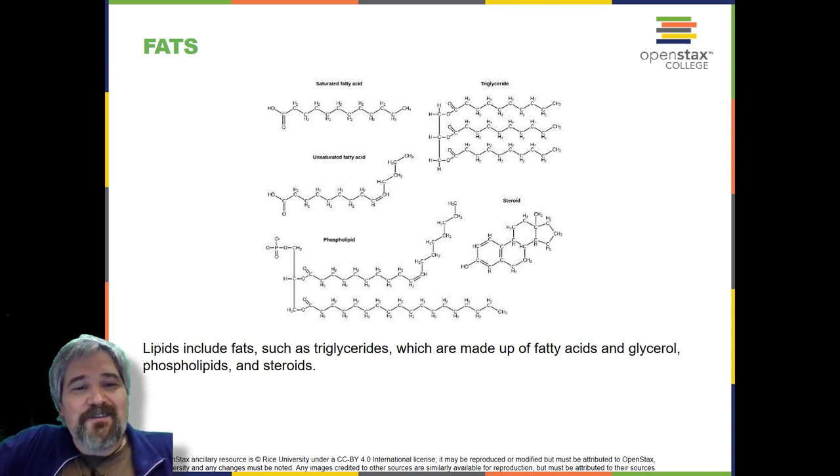Most unsaturated fats are liquid at room temperature and are called oils. If there is one double bond in the molecule, then it is known as a monounsaturated fat, an example of which is olive oil. If there is more than one double bond, then it is known as a polyunsaturated fat, canola oil being an example.